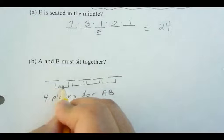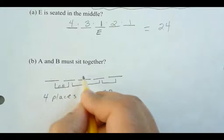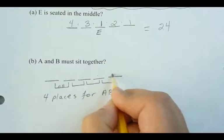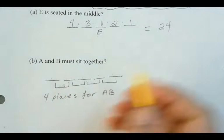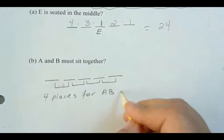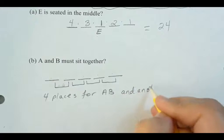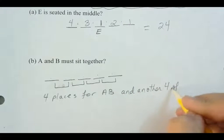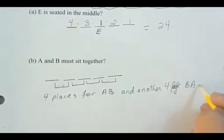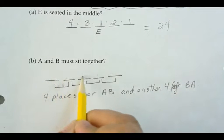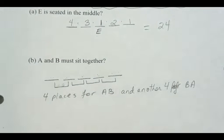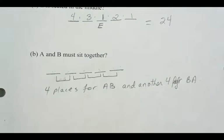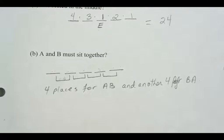A and B can sit as A-then-B in four different adjacent positions. But they could also sit B-then-A, giving another four arrangements. So within their paired unit, A and B can be arranged in two ways, giving 4 positions times 2 internal arrangements. Now the five spots are effectively reduced to four spots — treating A and B's pair as one unit among four total.